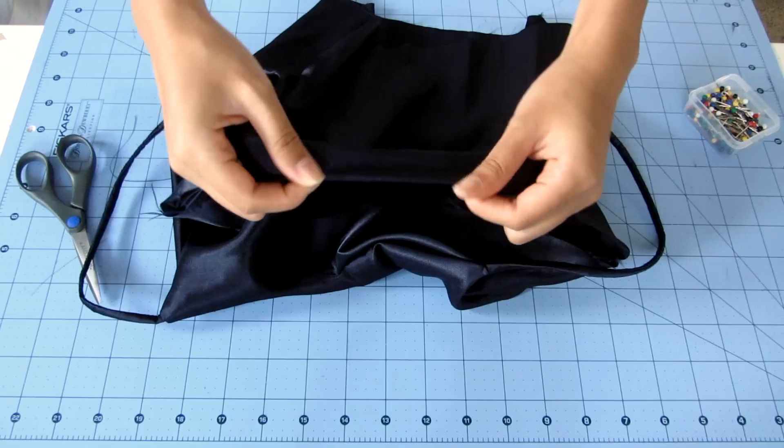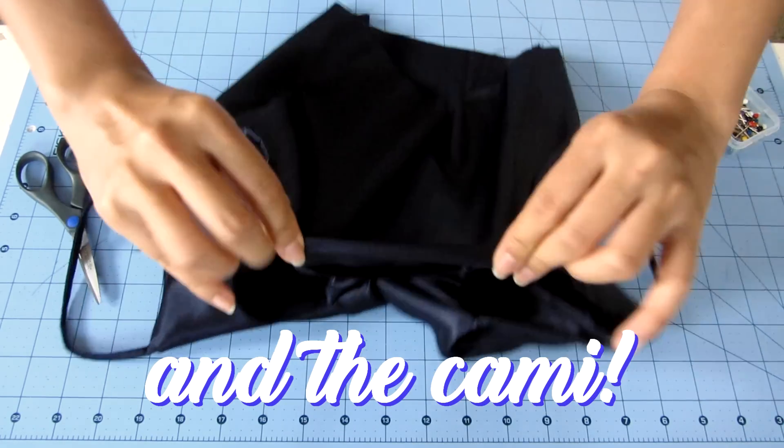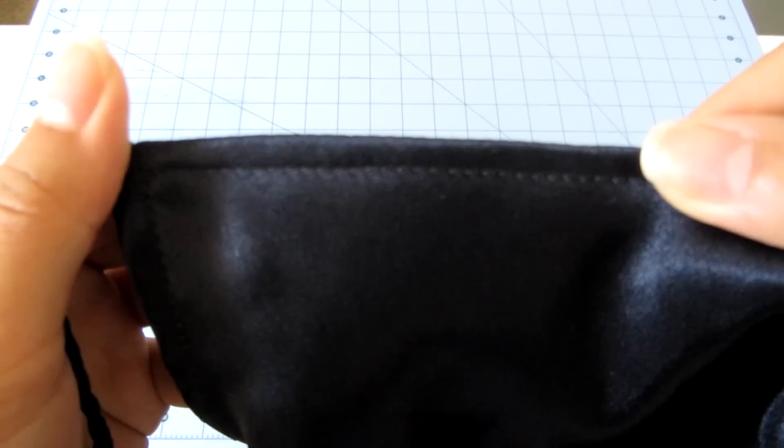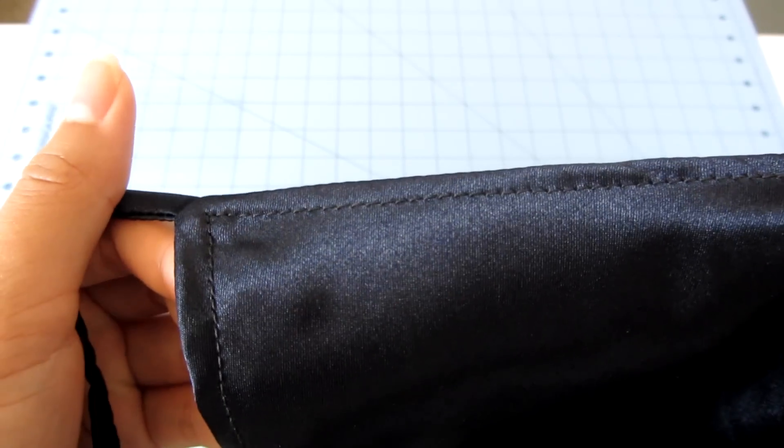And so after you do that, hem the facing by folding the seam allowance twice a quarter of an inch towards the wrong side, and then sew a top stitch about a quarter of an inch from the edge.